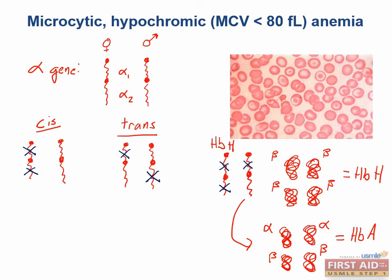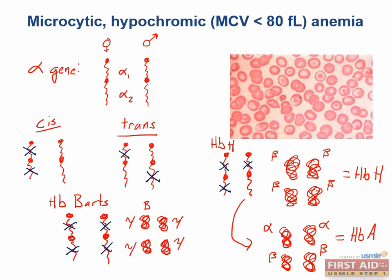With four mutated alpha-globin genes, the fetus will die in utero of hydrops fetalis — massive fluid overload and edema. Without any normal alpha-globin protein, even hemoglobin F cannot be formed, and the fetus forms an abnormal hemoglobin called BARTs, consisting of four gamma subunits. Think of hemoglobin BARTs as a greedy Bart Simpson holding on to oxygen so tightly that the surrounding tissues can't get any oxygen.